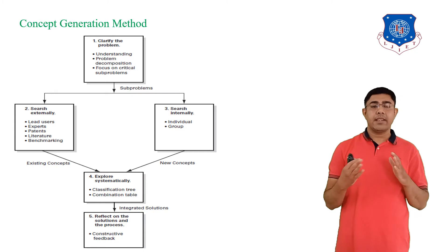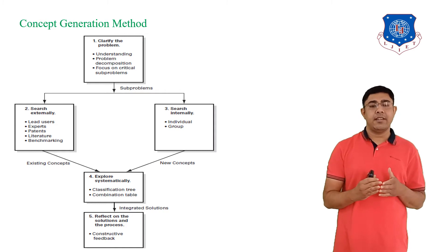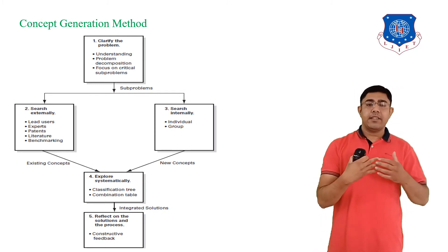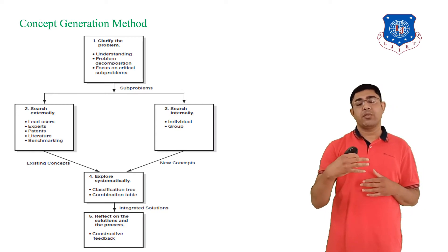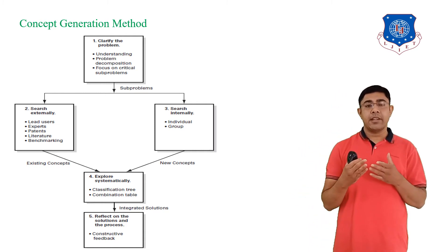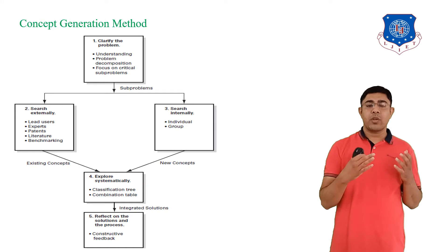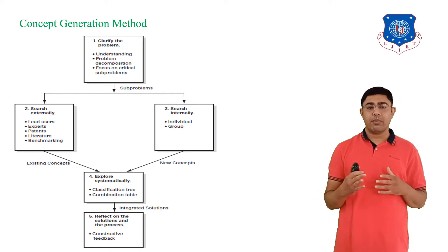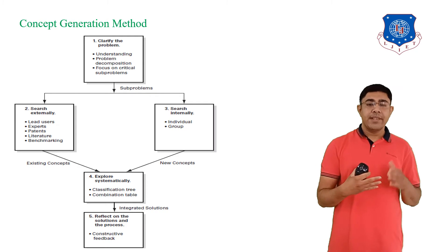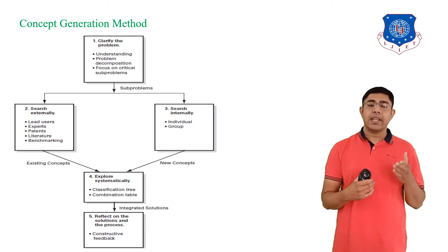We then solve these sub-problems by external or internal search. Step two is the search externally. The aim of external search is to find existing solutions or existing concepts for the sub-problems or overall problem. For that, the main objectives are to conduct lead user interviews, consult experts, research patents related to the sub-problems, and search the literature for existing solutions. At the end of this step we get existing concepts.